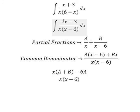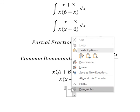About x we have negative number 1, that means A plus B equals to negative number 1. Negative 6A equals to negative number 3. And now we create the system of equations.